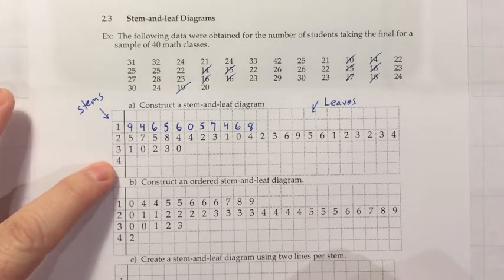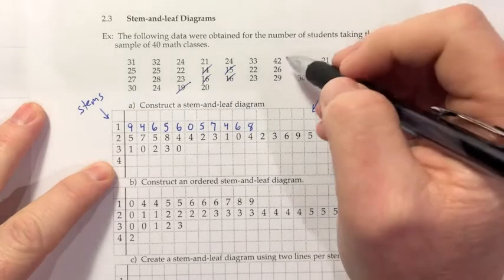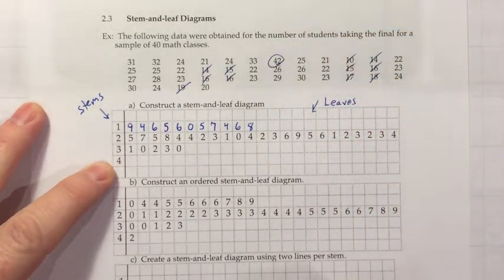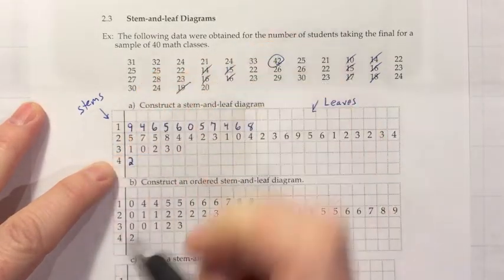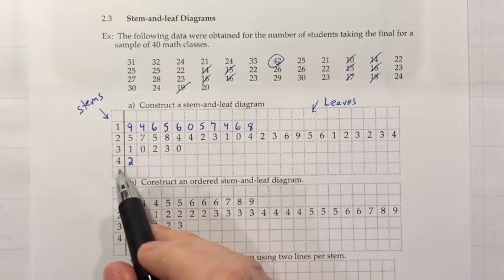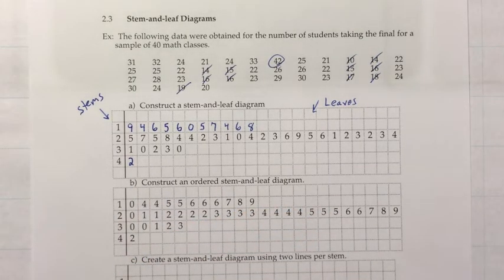We also have a line here for anything in the 40s. So looking for that real quick, I see a 42 right there and that if you scan through the data set is the only number in the 40s, so if I put the 2 here, then I have the 40 from the stems part and the 2 from the leaf, so 42. So that's the basics of how you would make a stem and leaf diagram.